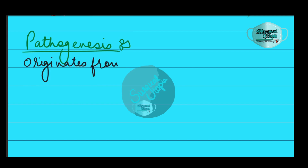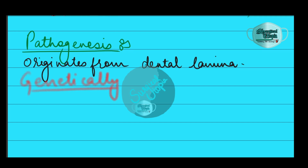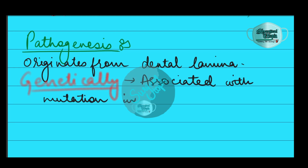Coming to the pathogenesis, it originates from the odontogenic epithelium or dental lamina in the remnants left from the tooth developmental stage. They are mainly thought to arise from the rests of Serres. There is also a genetic aspect to the pathogenesis: sporadic or non-syndromic and syndromic OKCs are associated with mutations in the gene PTCH.